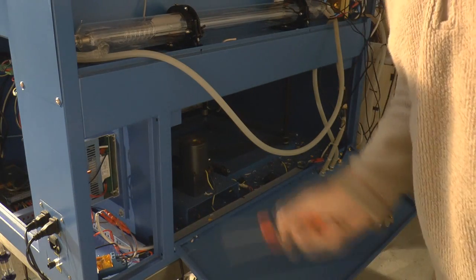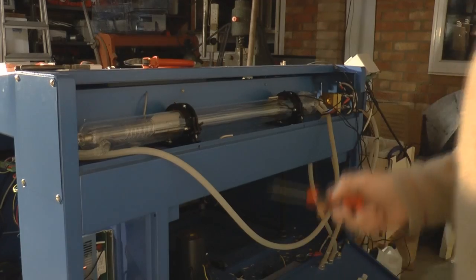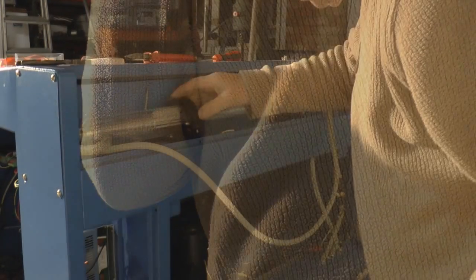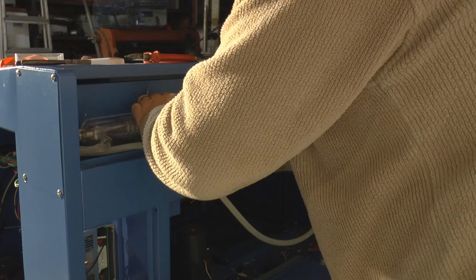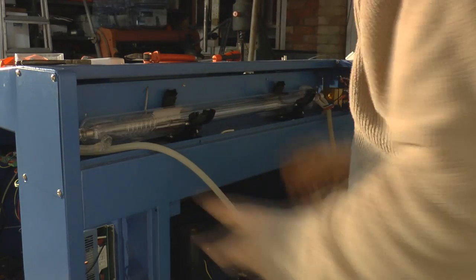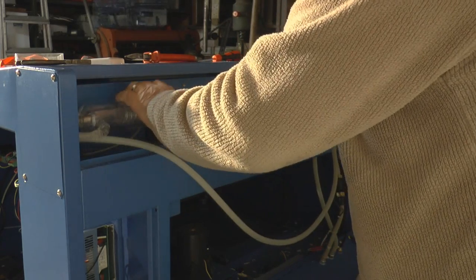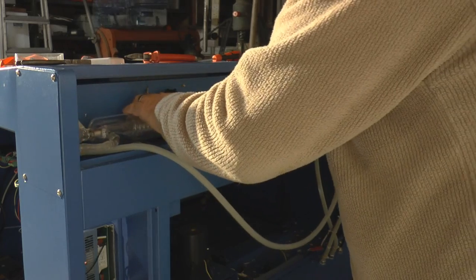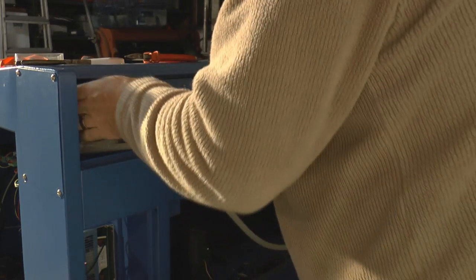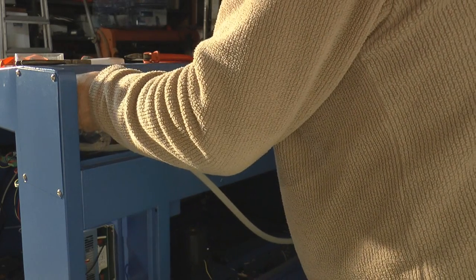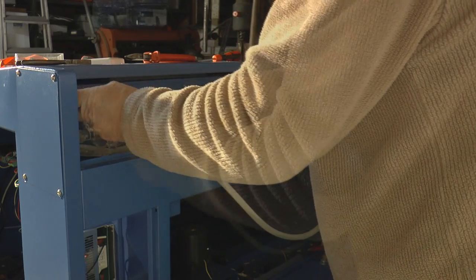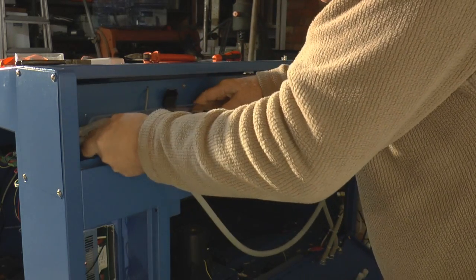Now, before I disconnect anything else here, what I should do is just loosen off my clamps. We just literally unclip these like that, and the tube will just lift out like this. But at the moment it's fixed in with the high voltage.